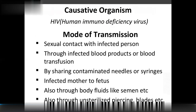The causative organism is Human Immunodeficiency Virus (HIV). Mode of transmission includes sexual contact with an infected person, infected blood products or blood transfusion, sharing contaminated needles and syringes, infected mother to fetus, body fluids like semen, and unsterilized piercing instruments and blades.